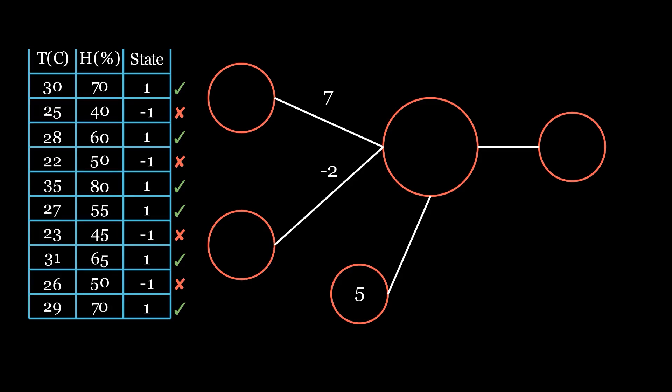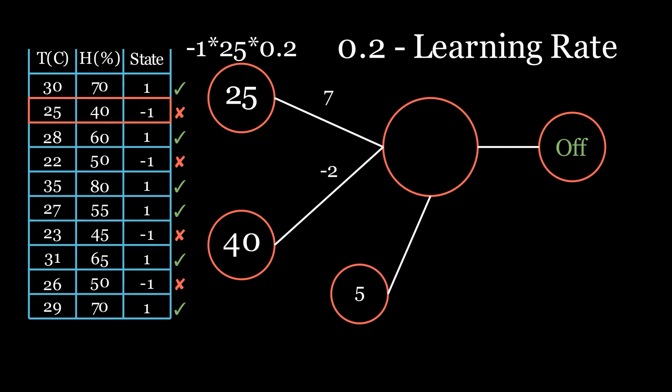So let's start the training. We need to pick the first value from our dataset that was classified incorrectly, because we are learning from mistakes. Then we take the value of the correct answer. In our example, mine is one because the AC unit should be turned off, and multiply it by data from this neuron. Then we multiply everything by 0.3. This value is called the learning rate. If it's low, our learning will be slower but more precise. If it's higher, it will be faster but less precise.